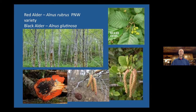This is the new alder cone up here on the upper right, and it will be fertilized by the pollen released by the catkins. Most alder species are going to look very similar to this. There's alder japonica, the black alder — alnus glutinosa — and the one we have here in the Pacific Northwest is alnus rubra, the red alder.